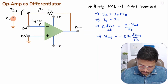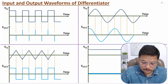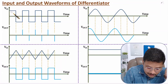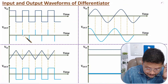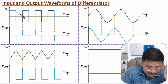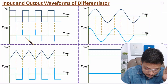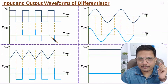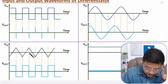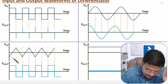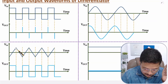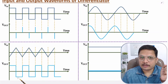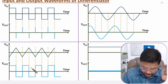Now let me show you the waveforms of input and output with the differentiator. With a square wave input, the output will have spikes occurring at the rising and falling edges. At the falling edge there is a negative spike, and at the rising edge there is a positive spike — because the differentiator acts like a high pass filter. If the input is a triangular wave, the portions with a positive slope differentiate to a positive constant, and the negative slope portions differentiate to a negative constant. So a triangular wave gets converted into a square wave after differentiation.